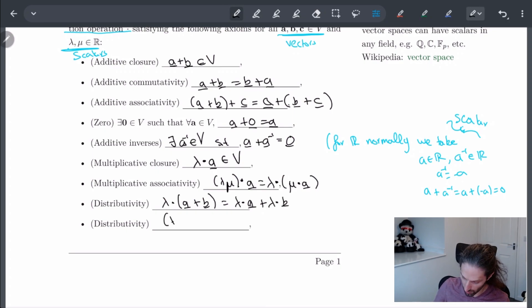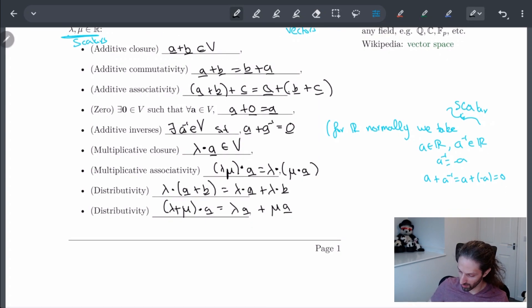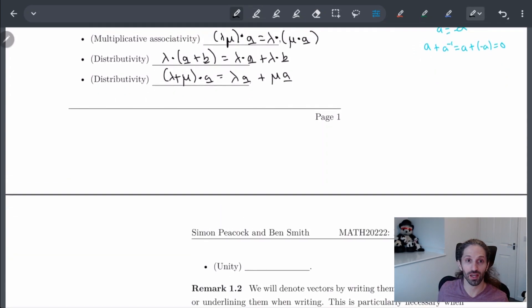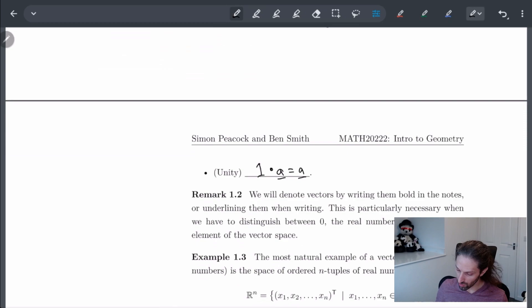And then I should have two different forms of distributivity. So I should have distributivity of the scalars, of a scalar and vectors. But also, I should have distributivity over the vectors. In this sense, this would be lambda A plus mu A. This is almost done. There's one other one which was on the next page, and this is a unity. So just like zero in addition, we should have some number one, where when we multiply by a vector, we just get the vector back.